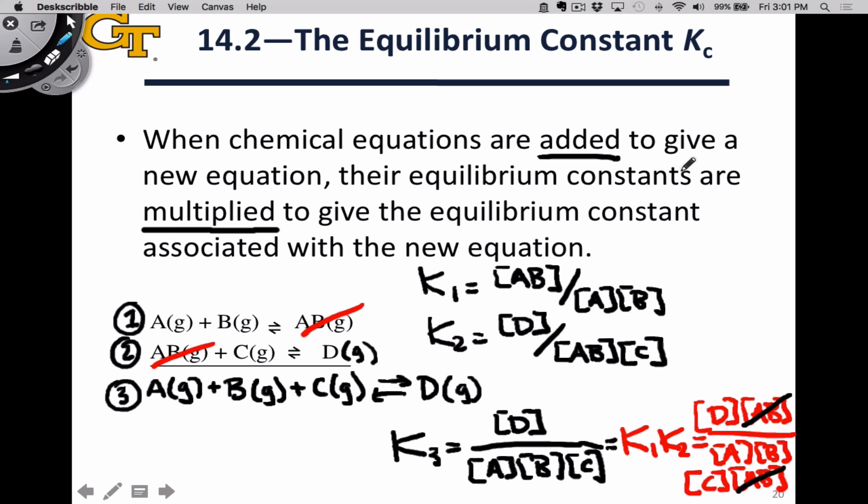Bottom line, when we add chemical equations, their equilibrium constants are multiplied to give the equilibrium constant for the composite reaction, the sum of the two. This applies to more than two reactions, by the way.